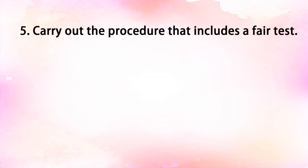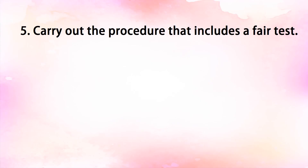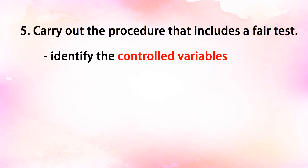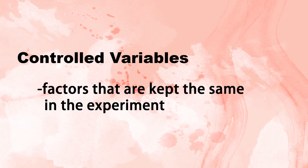The number five component is to carry out the procedure, which includes a fair test. This is the step in which you will perform the experiment, including the fair test. A fair test means ensuring that in an experiment, one factor — the independent variable — affects another — the dependent variable — by keeping all other conditions constant or the same. In a fair test, you will identify the control variables.